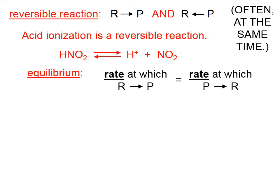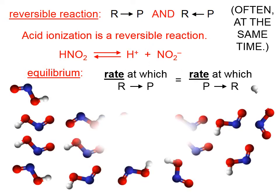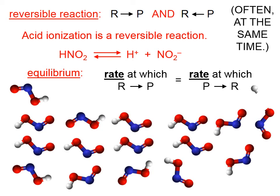Equilibrium is reached when the rates of those two processes are equal. In a nitrous acid solution, we would expect some number of HNO2 molecules, some number of H+ ions, and some number of NO2- ions. Since nitrous acid is a weak acid, we would expect many more neutral HNO2 molecules.